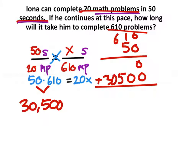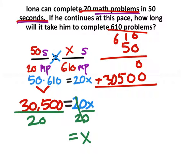And that should equal that 20x. So the final thing we need to do is solve for x by dividing both sides by the coefficient. So the 20s cancel out, and I'm left with the x. And 30,500 divided by 20.